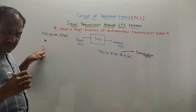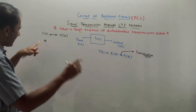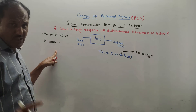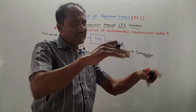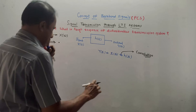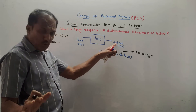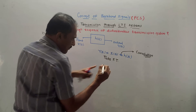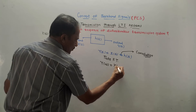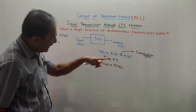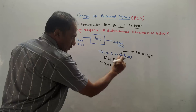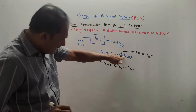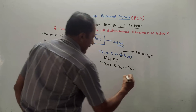Whenever you encounter convolution and take its Fourier transform, convolution gets converted into simple multiplication. So if you take Fourier transform of both sides of the output equation Y(t) = X(t) ∗ H(t), you get Y(ω) = X(ω) · H(ω), where the Fourier of H(t) is capital H(ω). This is Equation 1.